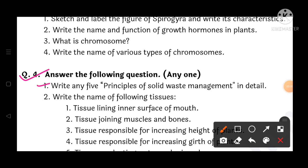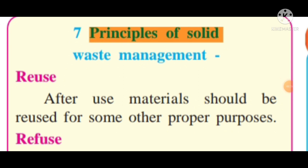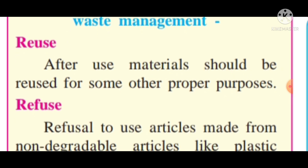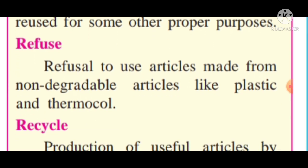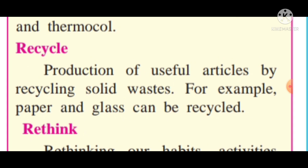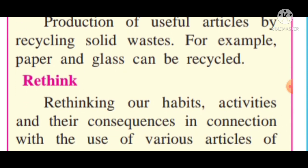Question 4: Write any five principles of solid waste management in detail. First, reuse — materials should be reused for some other proper purpose after use. Second, refuse — refusal to use articles made from non-degradable materials like plastic and thermocol. Third, recycle — production of useful articles by recycling solid waste; for example, paper and glass can be recycled. Fourth, rethink — rethinking our habits and activities in connection with the use of various articles of daily use.